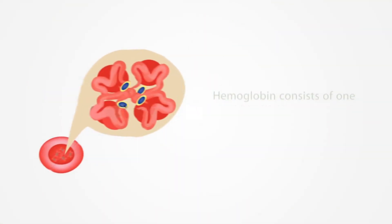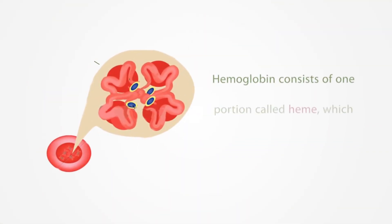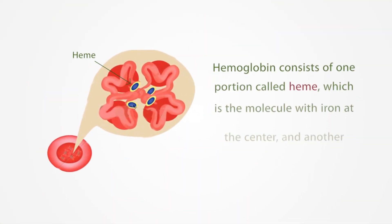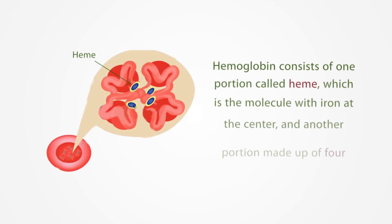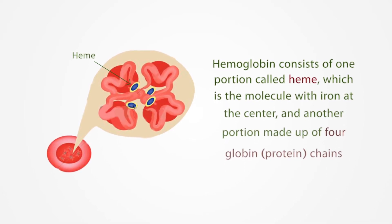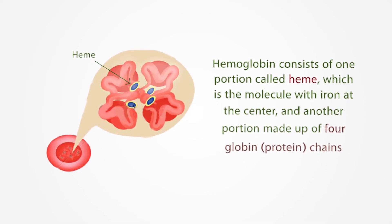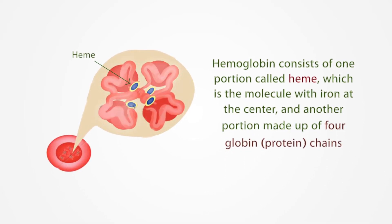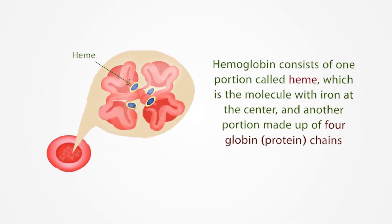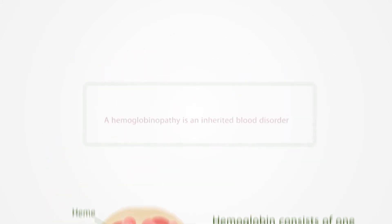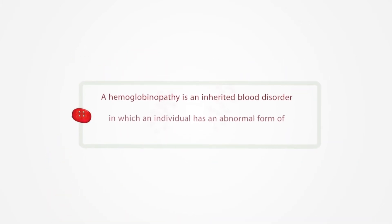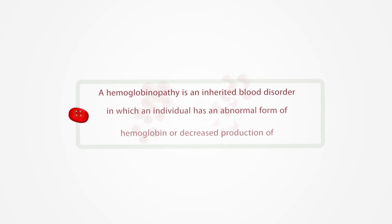Hemoglobin consists of one portion called heme, which is the molecule with iron at the center, and another portion made up of four globin protein chains. A hemoglobinopathy is an inherited blood disorder in which an individual